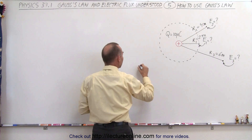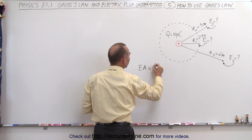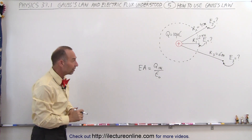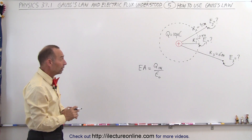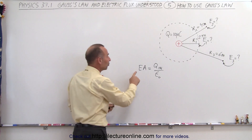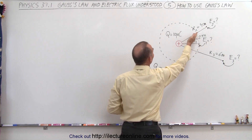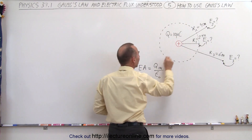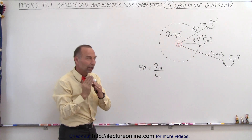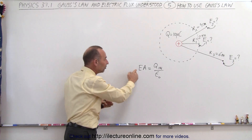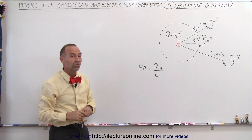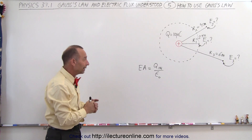The flux through the surface is the same everywhere, regardless of the size of the surface. So E·A is equal to the charge inside divided by epsilon sub nought, where epsilon sub nought is the permittivity of free space. This is Gauss's law. We can write it in this simplified form — presuming the electric field is constant anywhere along the surface, the charge is right at the center, and the electric field is perpendicular to the surface. Almost all cases will be that way.